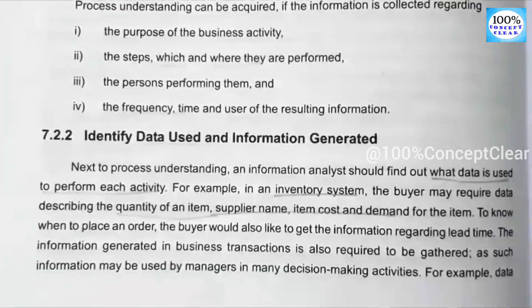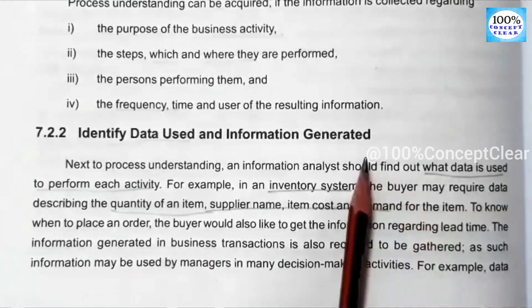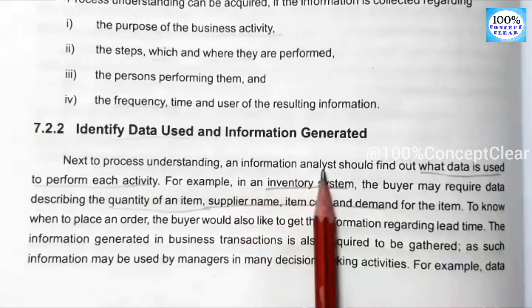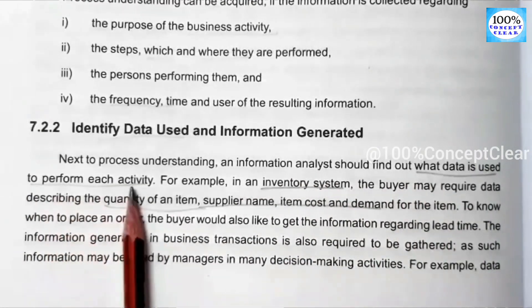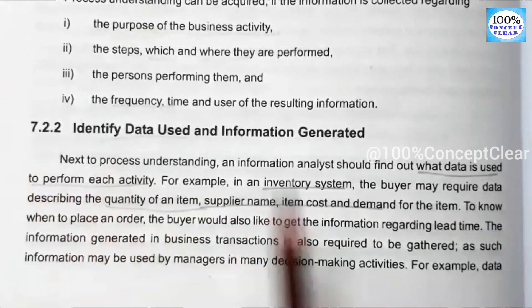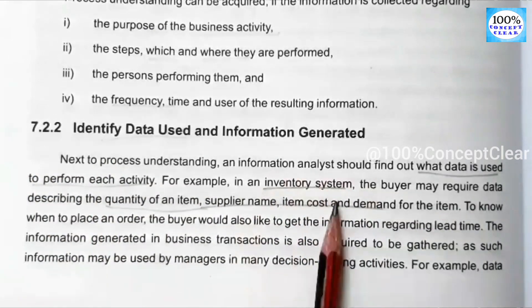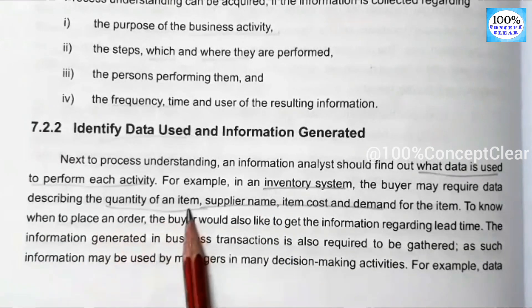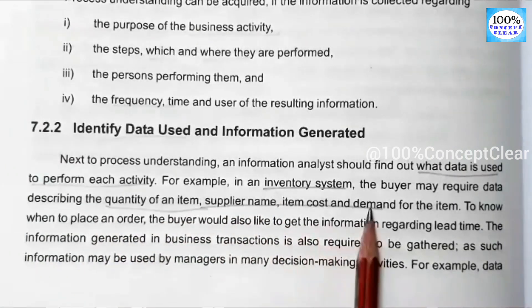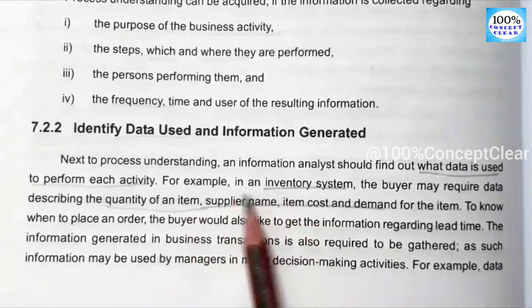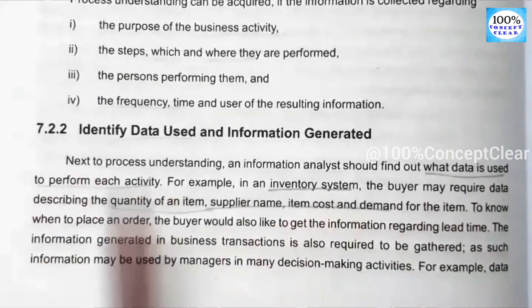The second step is to identify data used and information generated. An information analyst should find out what data is used to perform each activity. For example, in an inventory system, this includes the quality of an item, the supplier name, the item cost, and the demand for the items.